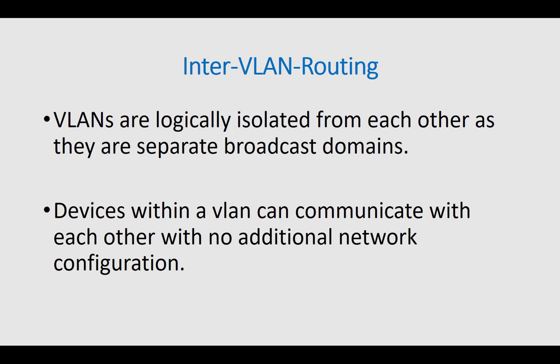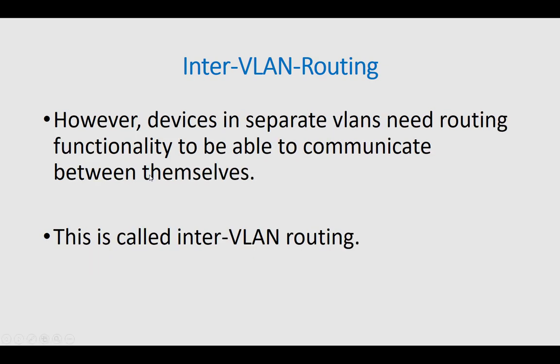In this video, we are going to look at how to do inter-VLAN routing using a multi-layer or layer 3 switch. I am going to use Packet Tracer version 8 for this lab. Before we get into the video, let's go through some of the basics very quickly. VLANs are logically isolated from each other as they are separate broadcast domains. Devices within a VLAN can communicate with each other with no additional network configuration. However, devices in separate VLANs need routing functionality to be able to communicate between themselves. This is called inter-VLAN routing.